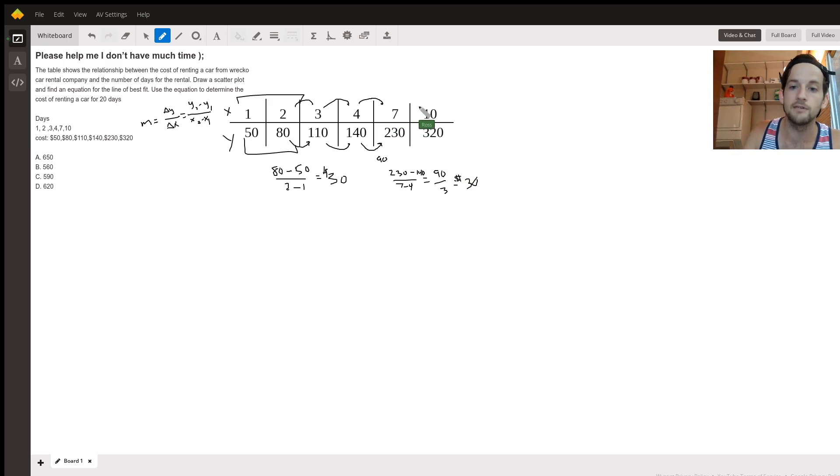So all they're doing here is skipping over some days and trying to catch you up. But it's still actually the same slope, they're just skipping from four days to seven days. The same thing happens here from seven to 10. That's three days, and 230 to 320, that's $90. But that's still going to come out to $30 a day. So you're in luck, because through the whole table, your slope is the same, the whole way through, it's $30 every day.